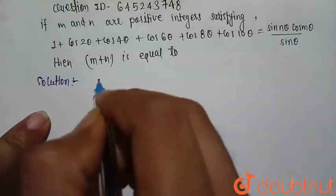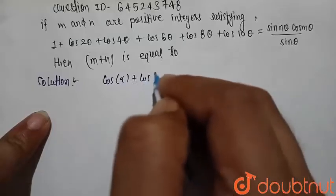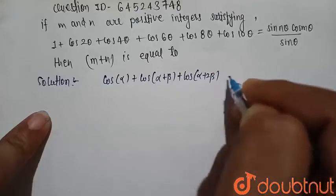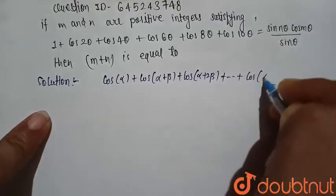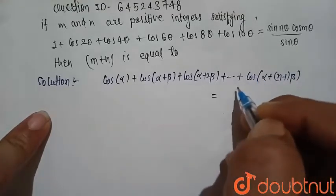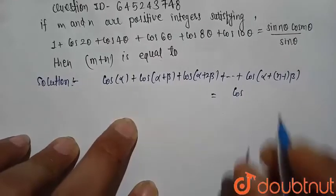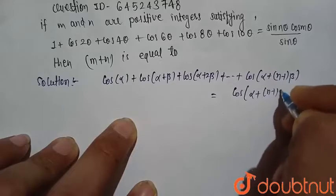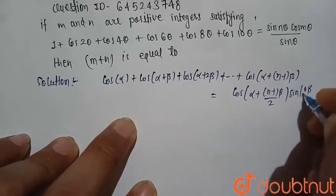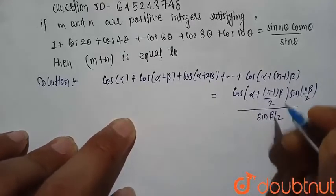Before solving this, we can write a formula: cosα plus cos(α+β) plus cos(α+2β) and so on till cos(α+(n−1)β). This sum is equal to cos(α + (n−1)β/2) multiplied by sin(nβ/2), all divided by sin(β/2). This is our formula.